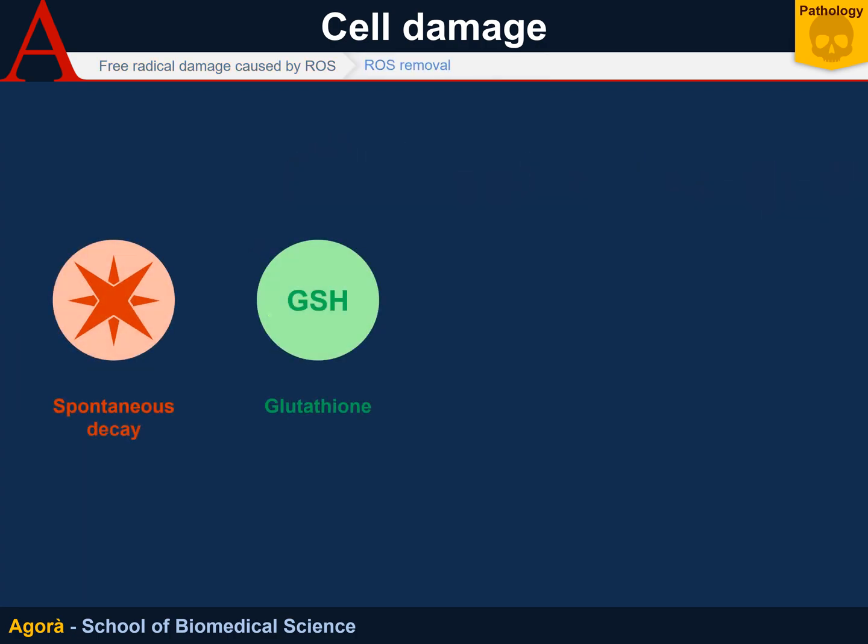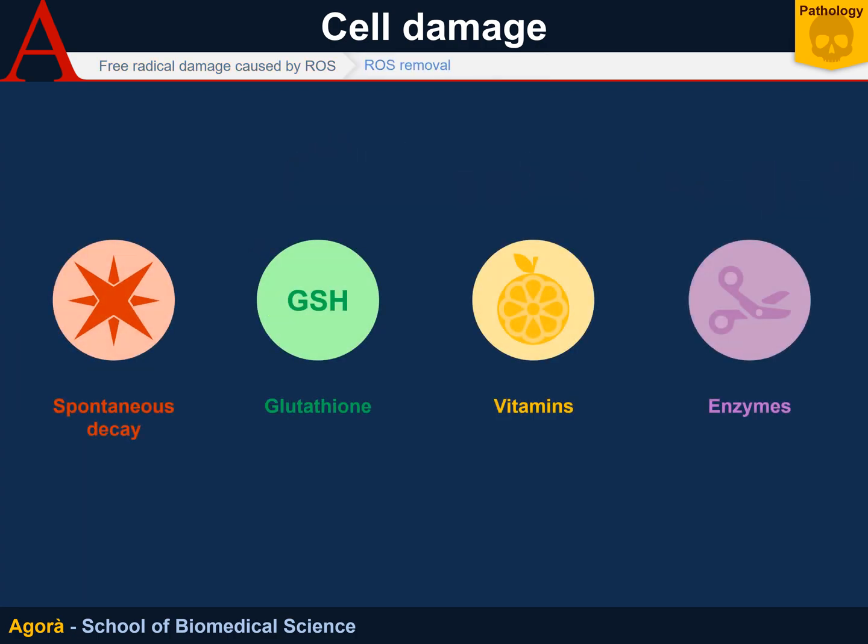There are four ways to remove free radicals. The first is by spontaneous decay. Free radicals are extremely reactive species, and as they are not controlled, they combine when they should not with cellular compounds.